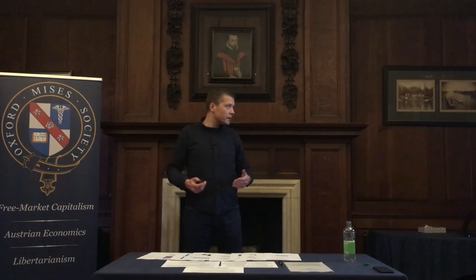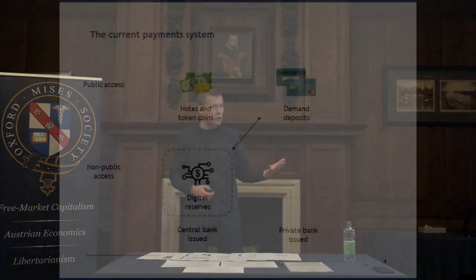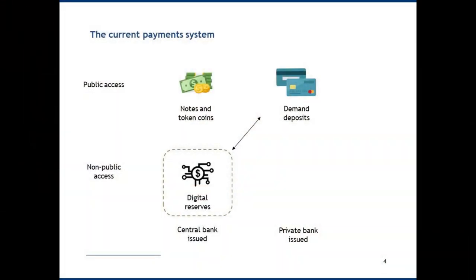When looking at these different types of asset, we can consider whether they're central bank issued — which notes, coins, and digital reserves are — meaning the central bank has a monopoly and full control. The commercial banking system plays a role in credit creation when it comes to our bank accounts. We can also distinguish between public access and non-public access: notes and coins are public, but digital reserves are not.